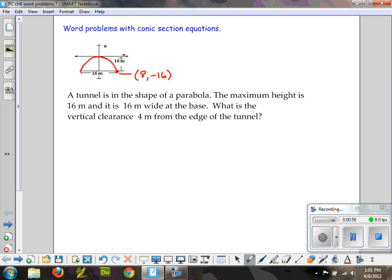What is the vertical clearance? The question we're going to try to find out: what is the vertical clearance 4 meters from the edge of the tunnel? So if this is 8, 4 is halfway between here. We basically want to know what the tunnel height is at that point, where we're 4 meters from either the middle, or in this case, coincidentally, 4 meters from the edge of the tunnel.